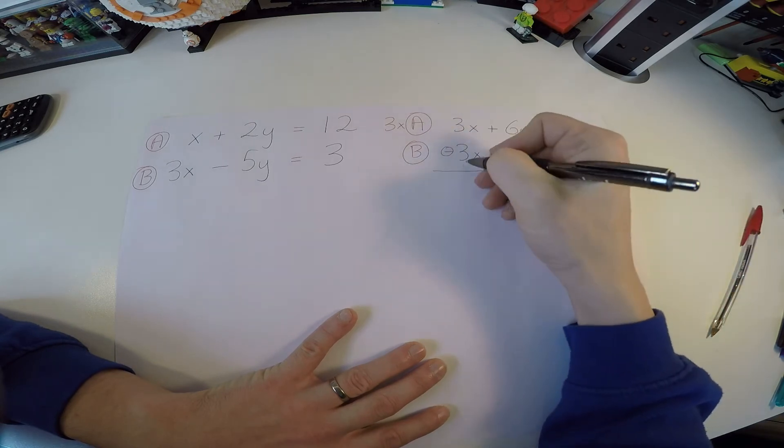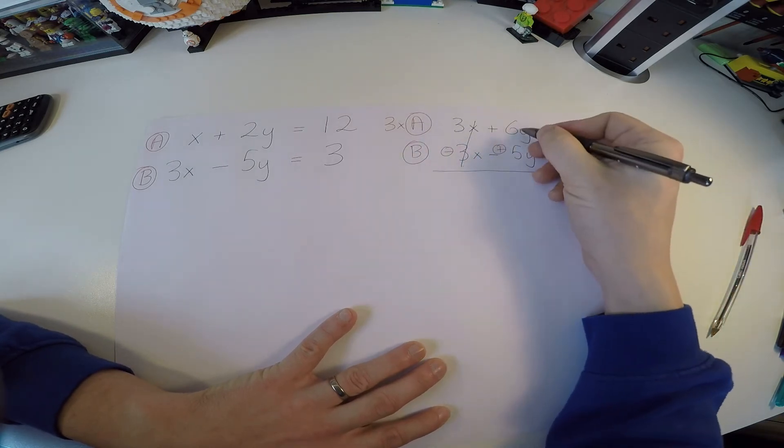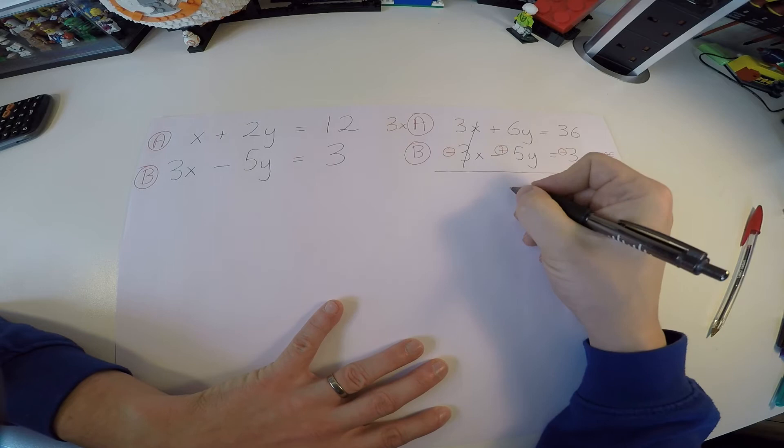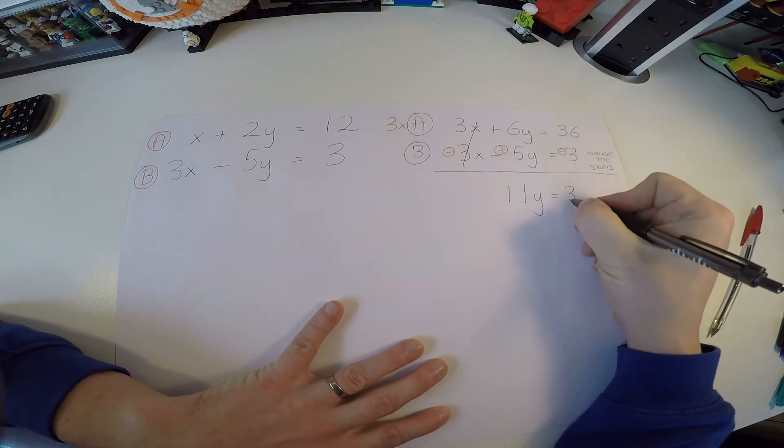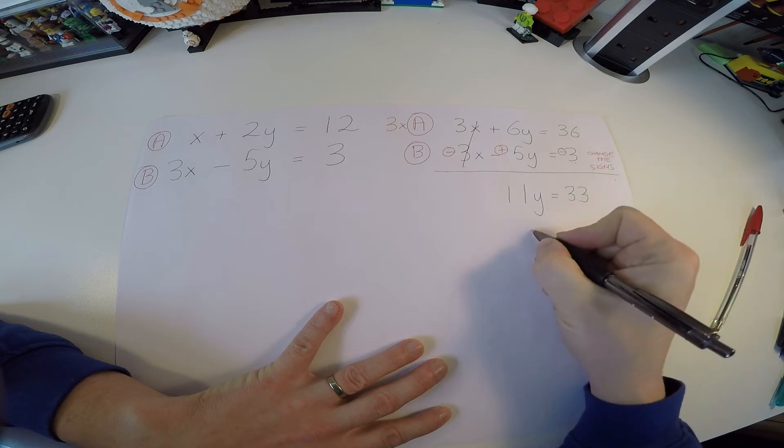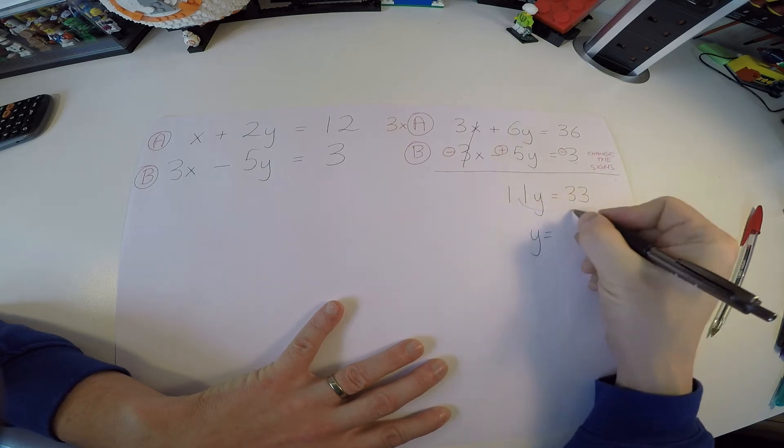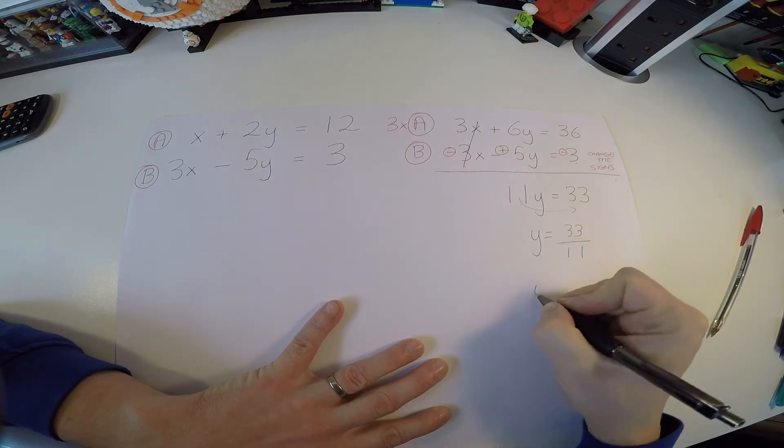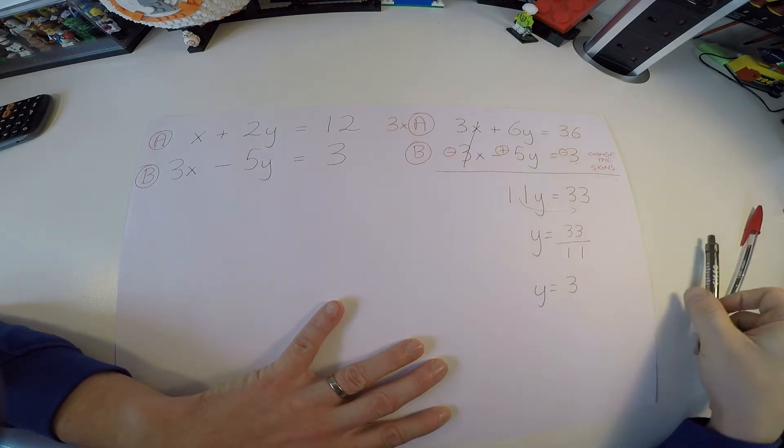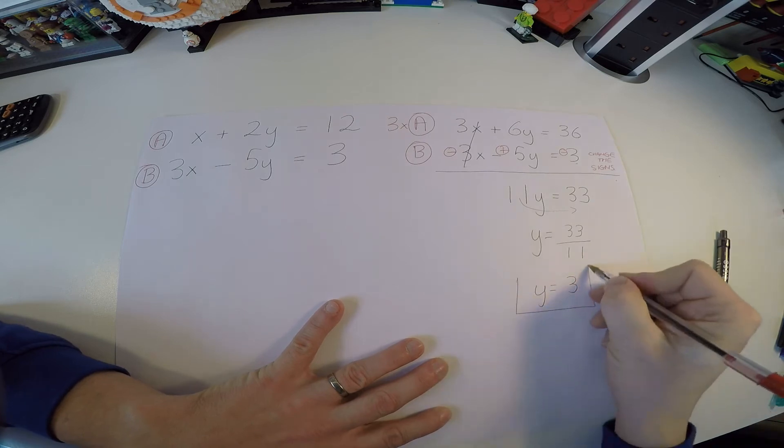Now 3x minus 3x, gone. 6y, but now a plus 5y. That gives me 11y. 36, but now minus 3, gives me a 33. So y must be equal to, this guy comes over under here, 33 over 11. y is equal to 3.